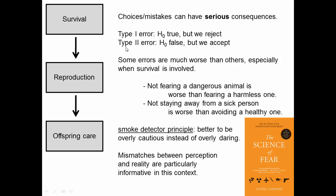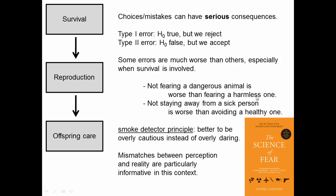Back when you took biostats, you learned about type one error — when the null hypothesis is true but you reject it — and type two error — when the null hypothesis is false but you accept it. Some errors are worse than others, especially when survival is involved. Not fearing a dangerous animal is a worse mistake than fearing a harmless one: if the animal is dangerous and you're not afraid of it, you'll get killed.